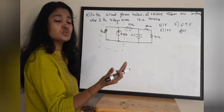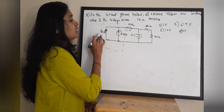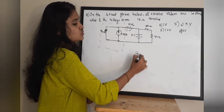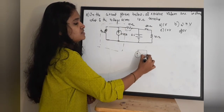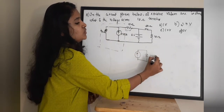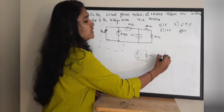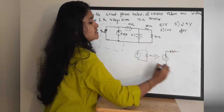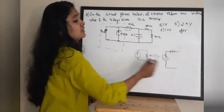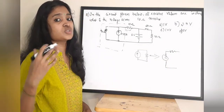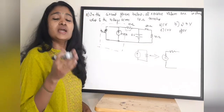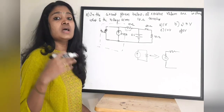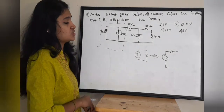Replace the current source with a voltage source by connecting the resistor in series. If there is a current source with a parallel resistor, you can replace it with a voltage source and the same resistor in series. This is the source transformation principle. If you are not familiar with this, please watch the video on source transformation — I will share the link in the description.